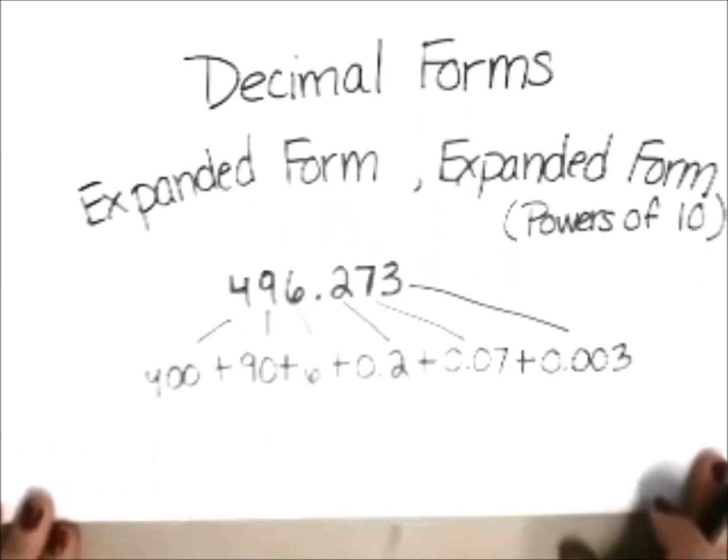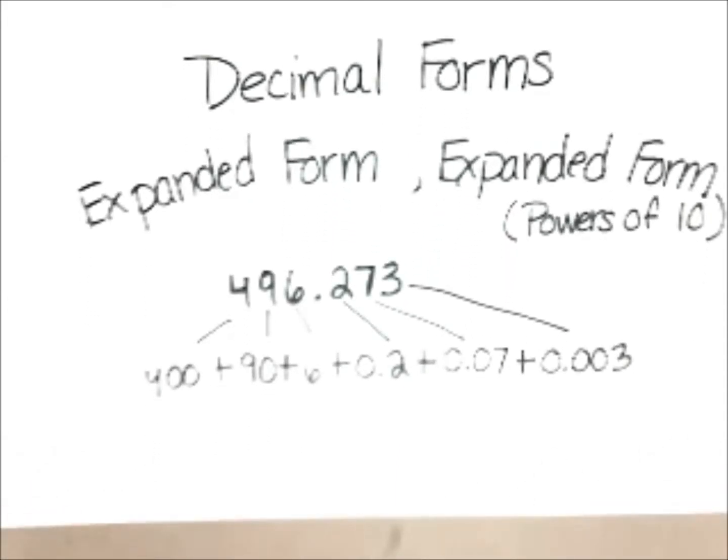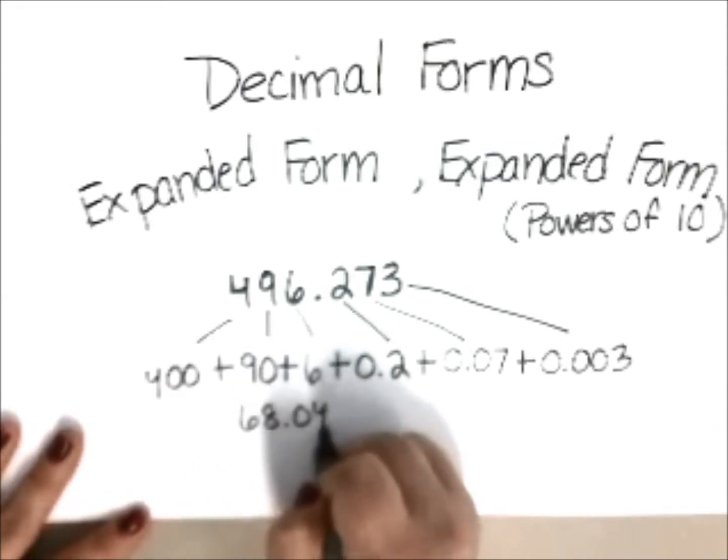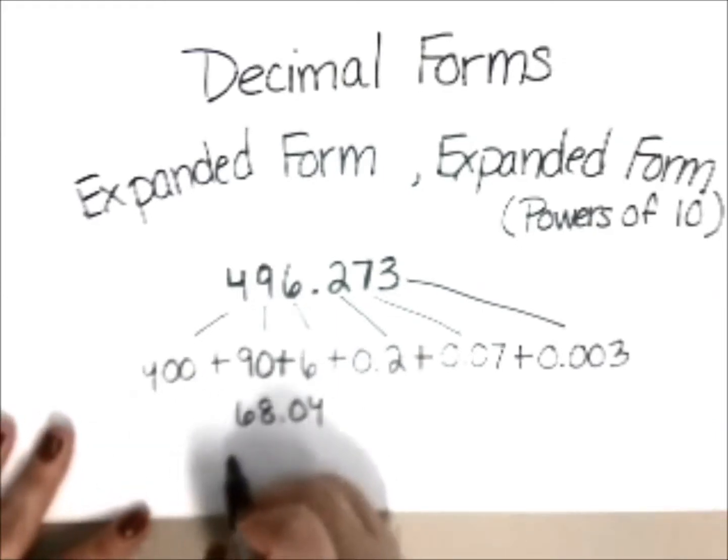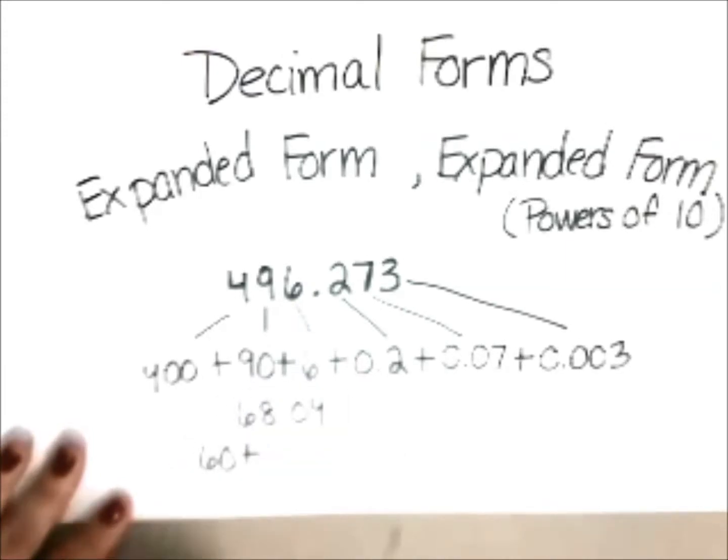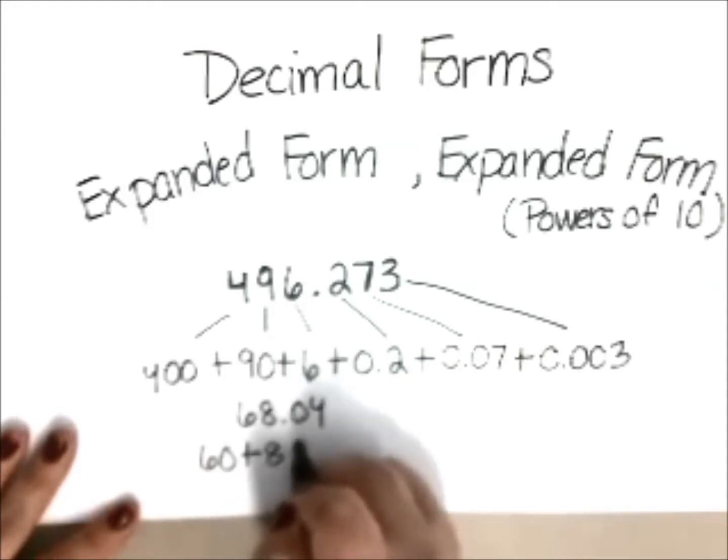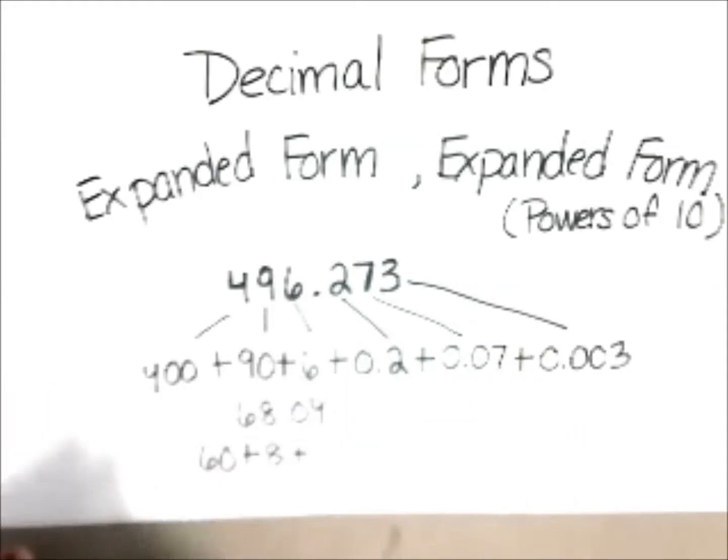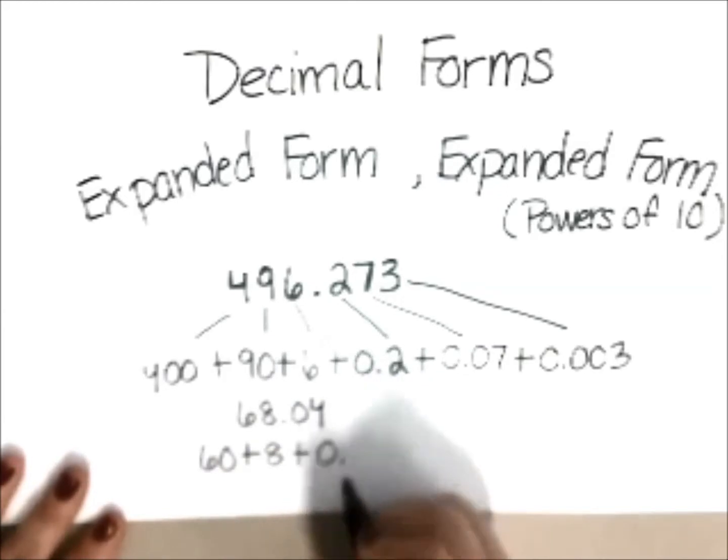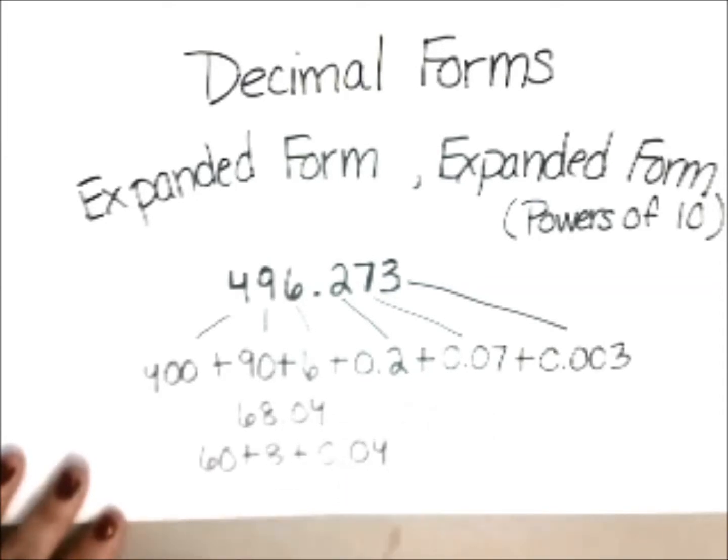Let's try that just one more time before we move on to expanded form powers of 10. I'll make this one a little simpler. Let's do 68 and four hundredths. 6 is in the tens place. So we are going to do essentially 6 times 10, which is 60. Plus 8 in the ones place, which is essentially 8 times 1. And we have nothing in the tenths place. So if there is nothing there, we don't put anything in our expanded word form. Now we have a 4 in the hundredths place. We are going to put our decimal point after a 0. And we are going to put the 4 in the hundredths place just as it is here in standard form.